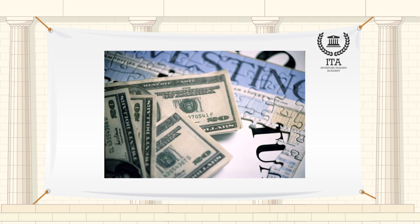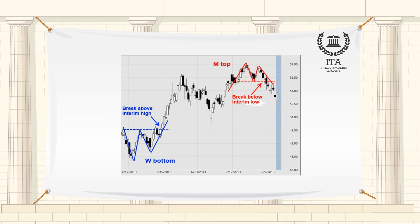This dynamic nature of Bollinger Bands also means that they can be used on different securities with the standard settings. For signals, Bollinger Bands can be used to identify M-tops and W-bottoms or to determine the strength of the trend.